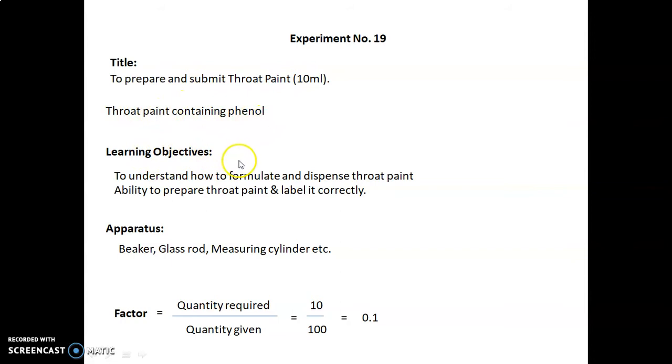Learning objectives are to understand how to formulate and dispense the throat paint and develop the ability to prepare and label it correctly. Apparatus required are beaker, glass rod, measuring cylinder, etc. Factor calculated as quantity required upon quantity given: 10/100 = 0.1.